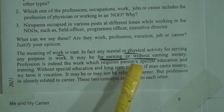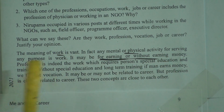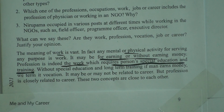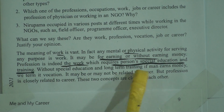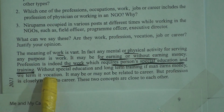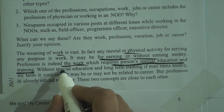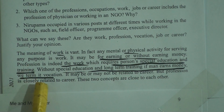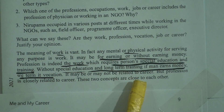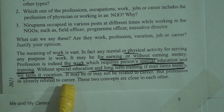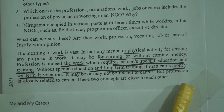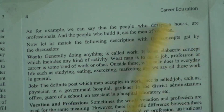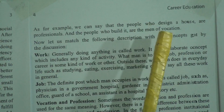Profession is indeed the work which requires a person's special education and training. So for profession, we need special education and training. Without special education and long-term training, if a man earns money, we term it vocation. It may or may not be related to career, but profession is closely related to career. These two concepts are close to each other. For example, the people who design a house are professionals and the people who build it are the men of vocation.